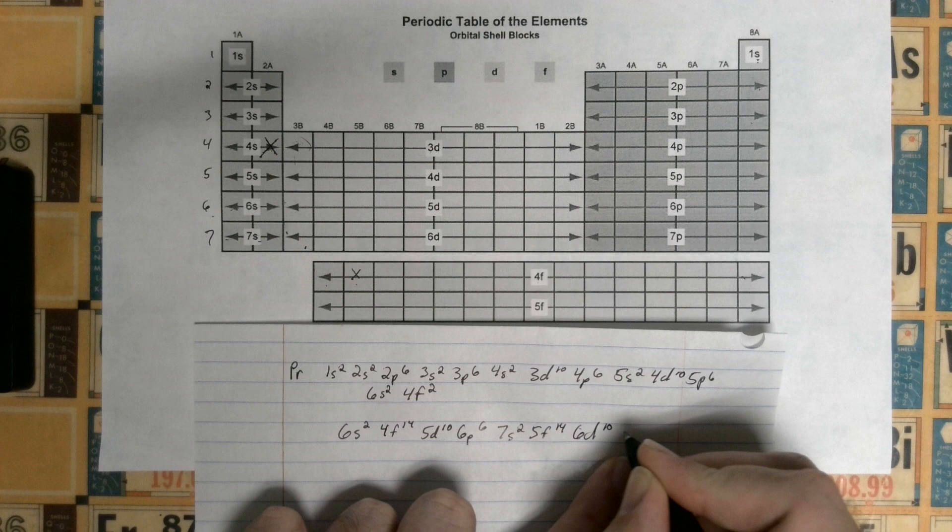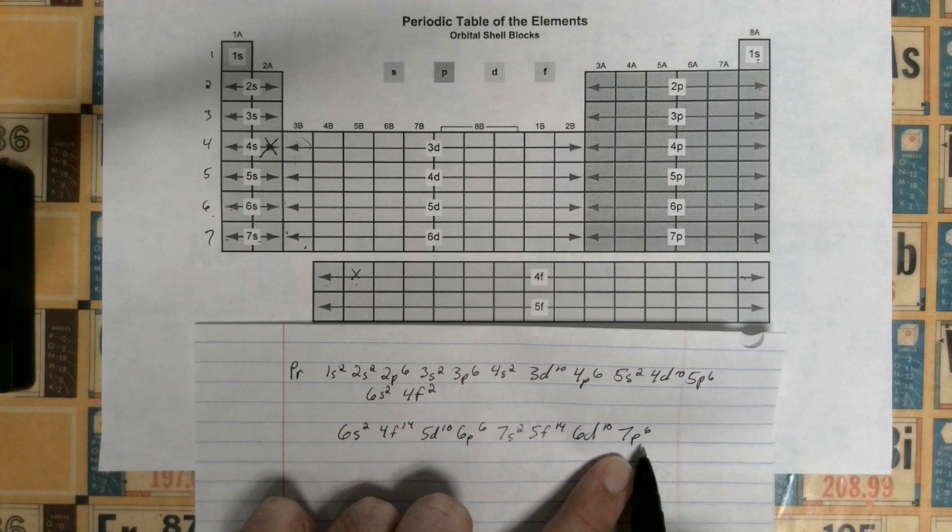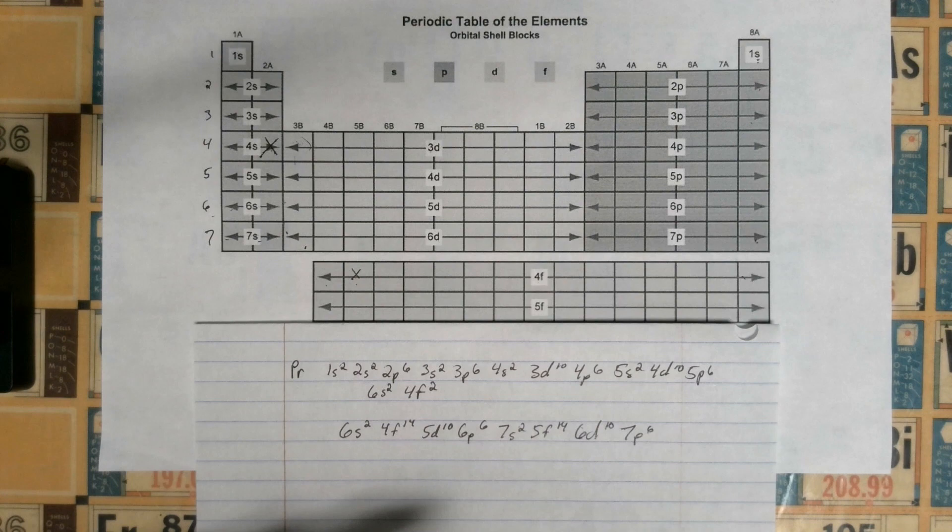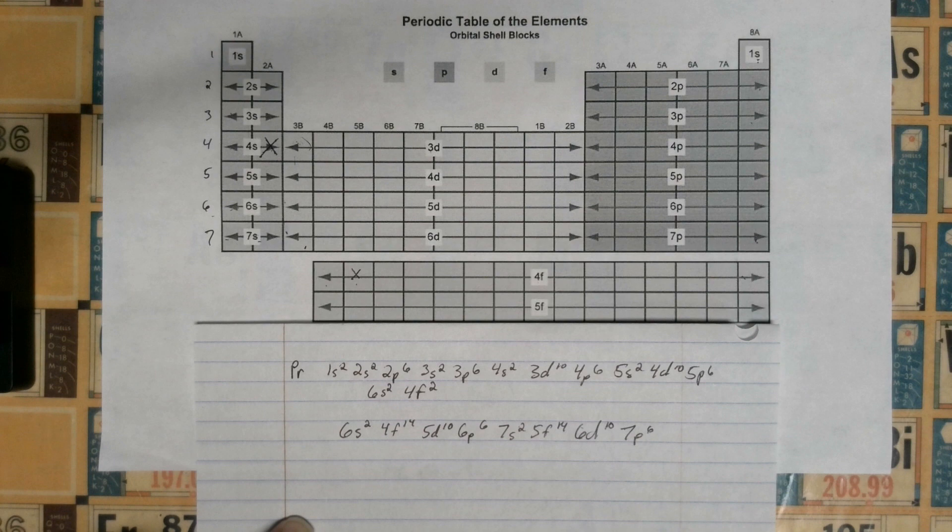And then 7s2, 5f14, because 7s then 5f, and then 6d10, and then the final thing you should have is 7p6. So if we're going all the way here, we would end at 7p6. In these last two rows, it goes s, f, d, p, s, f, d, p, as far as the order of those orbitals.